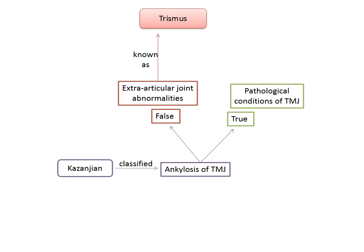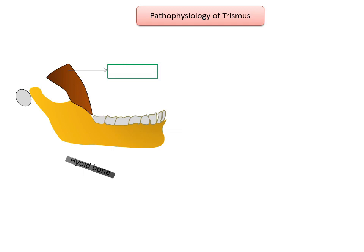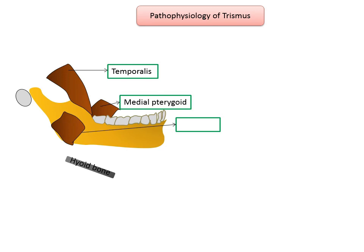Moving on to the pathophysiology of trismus — how does trismus occur? The muscles responsible for mouth closure, namely the masseter, temporalis, and medial pterygoid muscles, which are the muscles of mastication, exert a force 10 times greater than that exerted by the muscles that open the mouth.